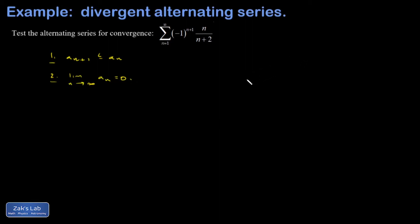And just at a glance, I can tell that the large n limit of these terms is not going to zero. So let's just try to illustrate this. The limit as n goes to infinity of n over n plus 2.